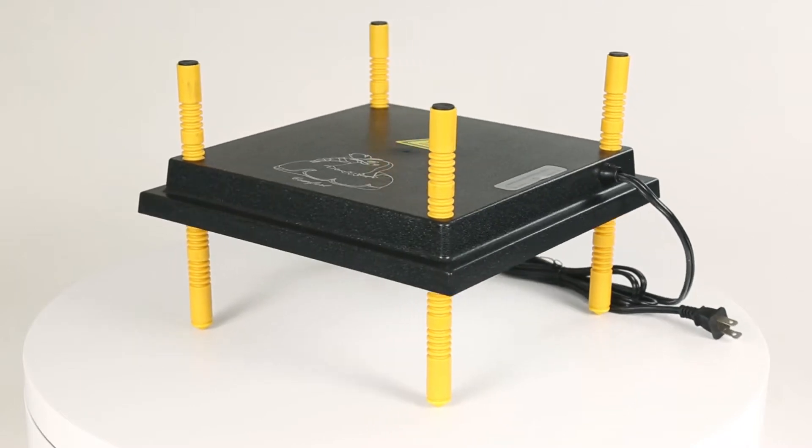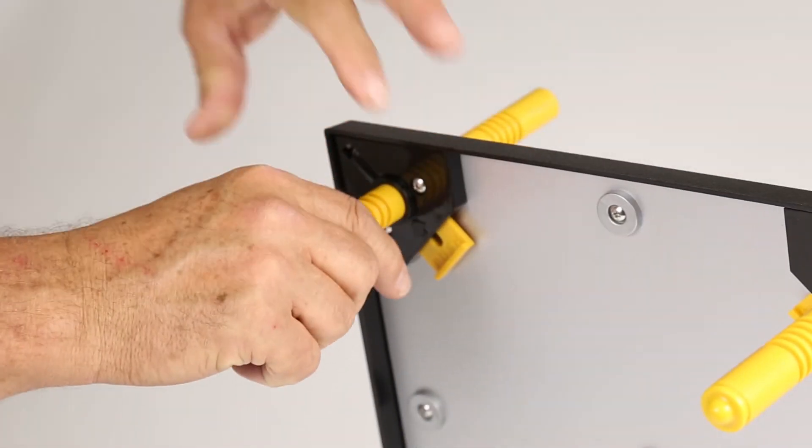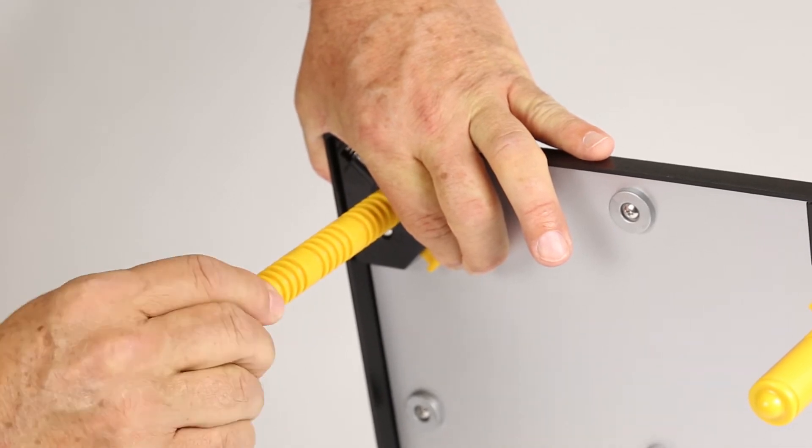The litter will remain between 85 to 95 degrees. Adjustable legs allow the comfort plate to be raised from 1 inch to 7 inches as the chicks grow.